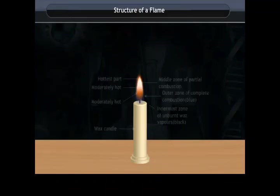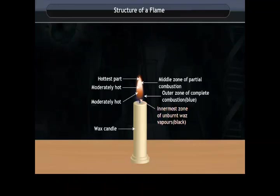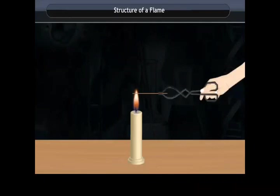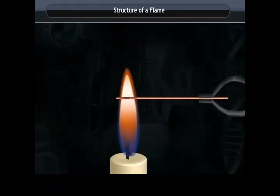Structure of a flame. Let us now discuss the properties of the three zones of a candle flame in detail. The outermost zone of the flame is the hottest part, and the innermost zone is the least hot part. If we hold a part of a thin long copper wire inside the non-luminous zone of the flame for 30 seconds, then that part of the copper wire becomes red hot.